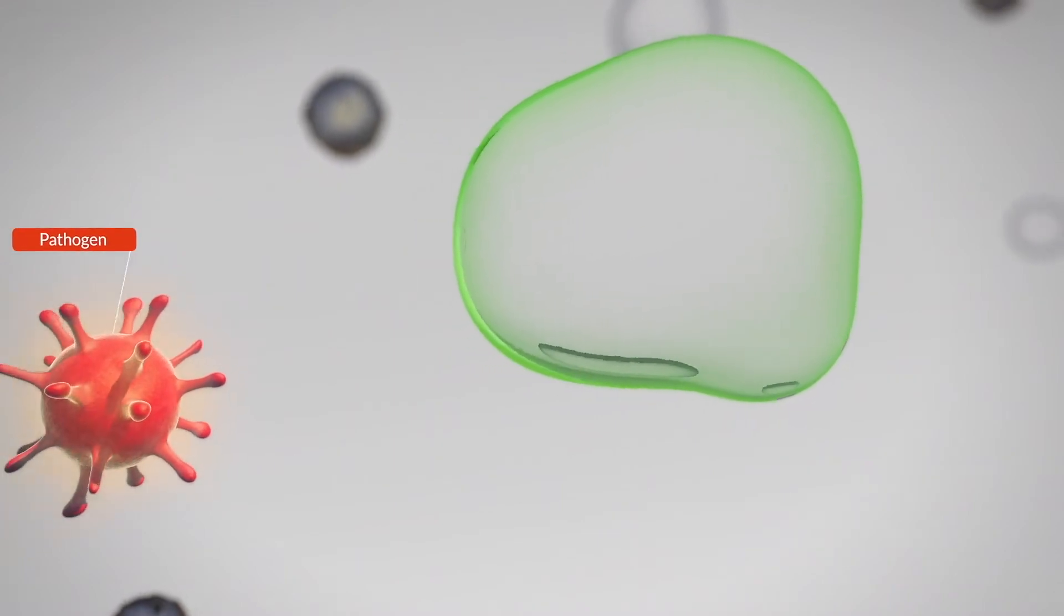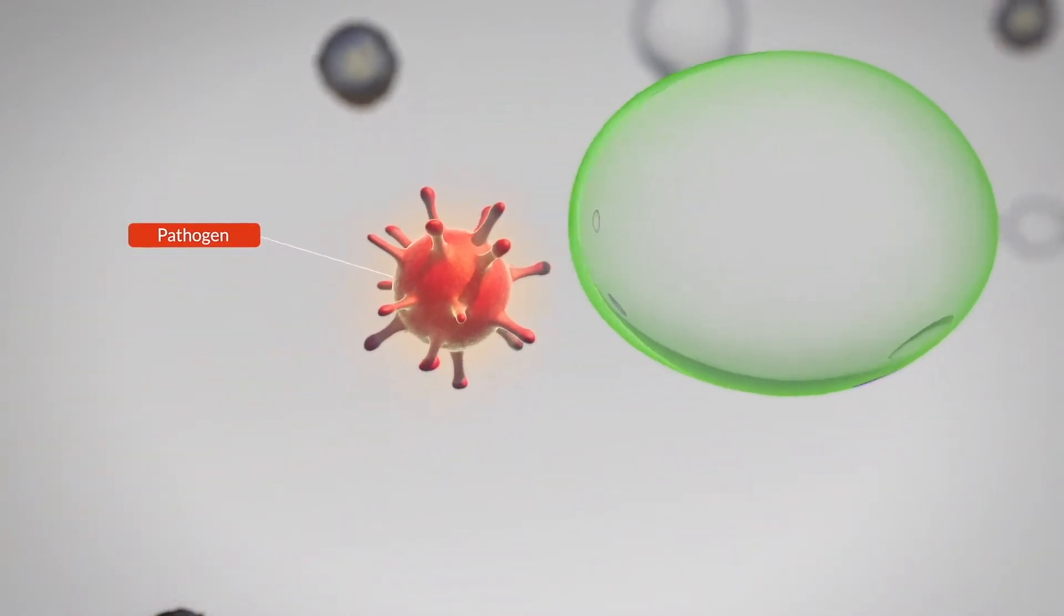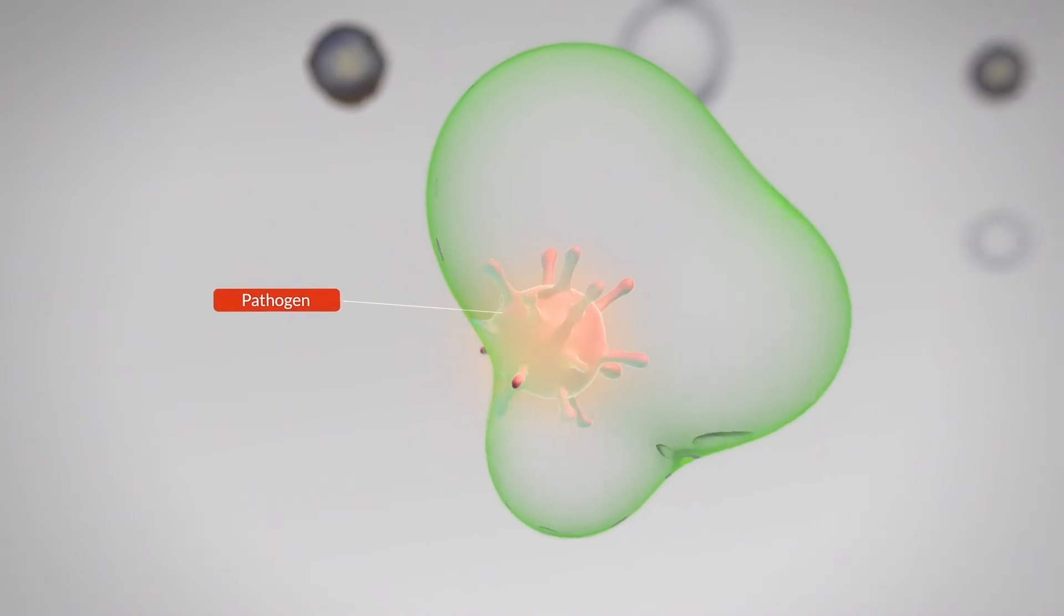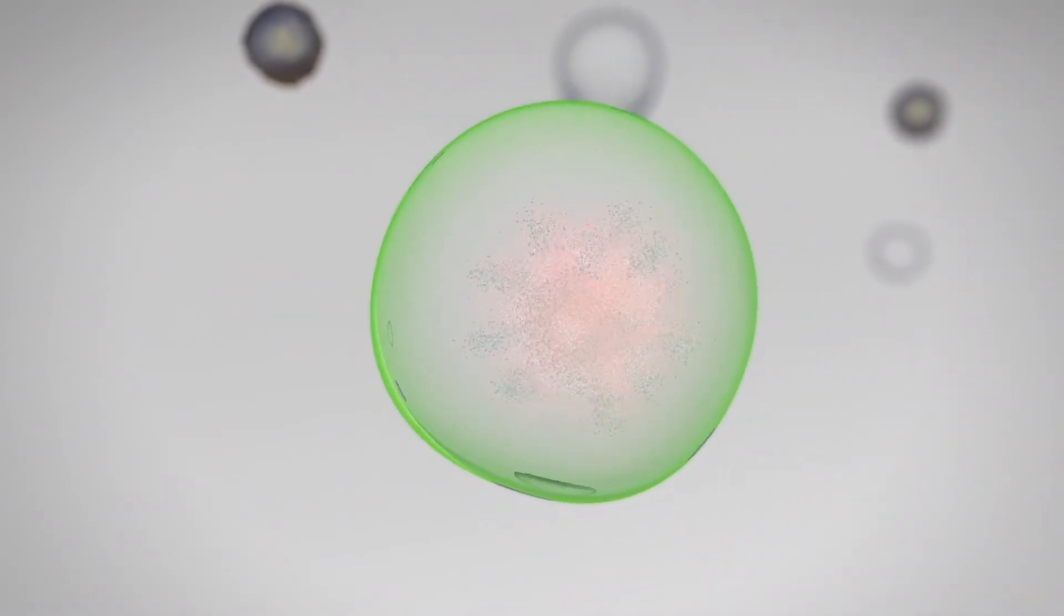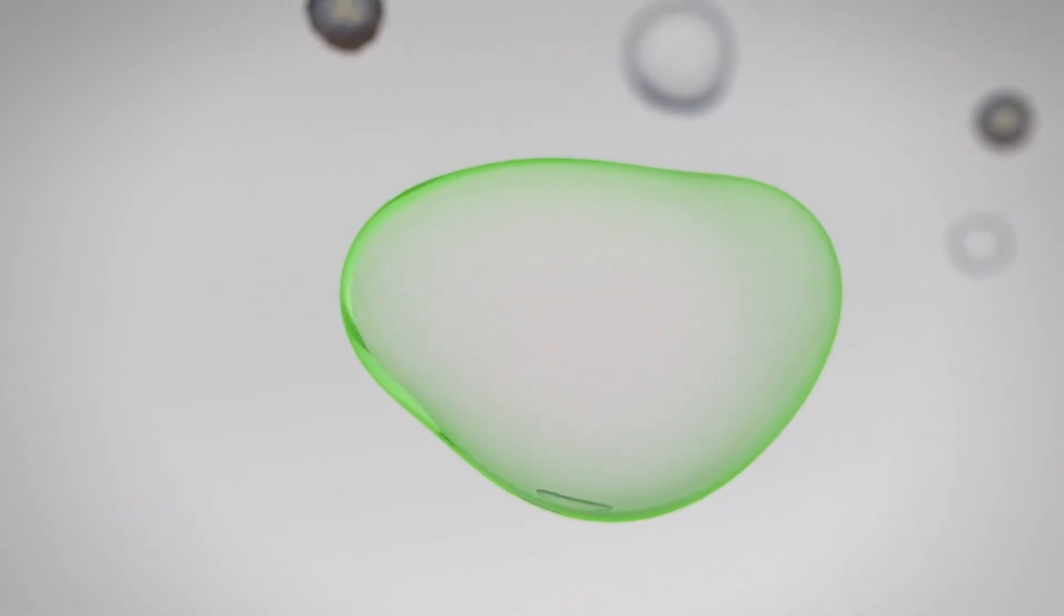Through a process called phagocytosis, macrophages devour invaders much like Pac-Man. Furthermore, stimulated macrophages also communicate the presence of the intruder to the body's other defenders.